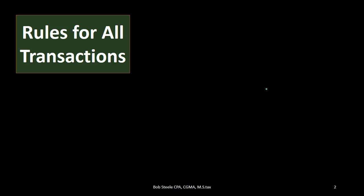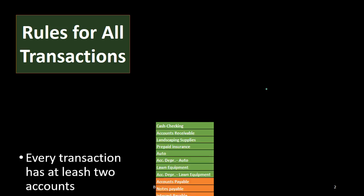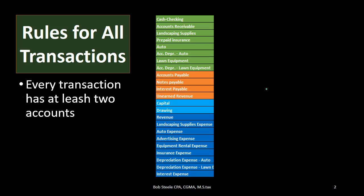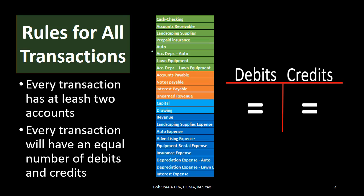The rules for every transaction — including adjusting journal entries or normal journal entries — include: every transaction has at least two accounts affected. So if this is our chart of accounts, we would need at least two of these accounts involved in every transaction — maybe more, but the minimum would be two. Because we need an equal number of debits and credits in each journal entry, each journal entry would need at least two accounts in order to achieve that goal.